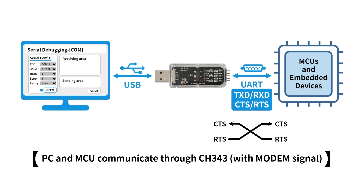This schematic diagram shows the scenario where two modem signals, CTS and RTS, are added when the MCU communicates with the PC through the CH343. Flow control of serial communication can be realized by means of CTS and RTS. The CTS and RTS of the devices at both ends of the UART interface are cross-connected. CTS is a status input and RTS is a status output. When the device at one end can receive data, it will set RTS low, the CTS of the corresponding device at the other end will be pulled low, and the device will start sending data immediately.